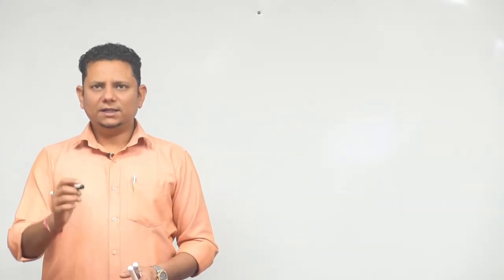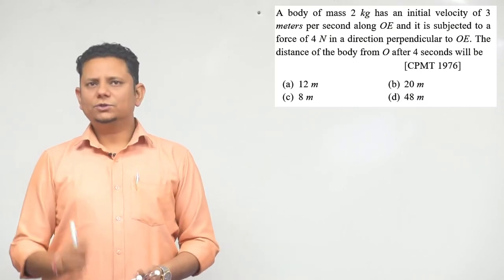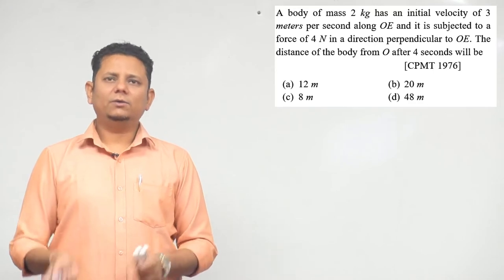Next question. A body of mass 2 kg has an initial velocity of 3 meters per second along OE and is subjected to a force of 4 newton in a direction perpendicular to OE.